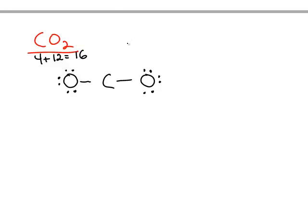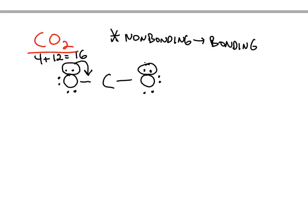However, the carbon is not satisfied. This carbon only has four electrons around it. So in order to satisfy the carbon, this is where we have to rearrange the electron pairs. And when you rearrange electron pairs, that means non-bonding electrons are going to turn into bonding electrons. We can keep oxygen with eight electrons and give carbon some more if we move this lone pair and turn it into a bonding pair. And we could do the same thing with the non-bonding electrons on the right.